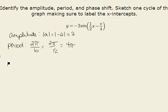Finally, we can look at our phase shift, which is given to us by the opposite of c over b, or the opposite of negative π over 4, all over b, which is one-half. If we invert and multiply, we would have π over 4 times 2, which would give us π over 2.